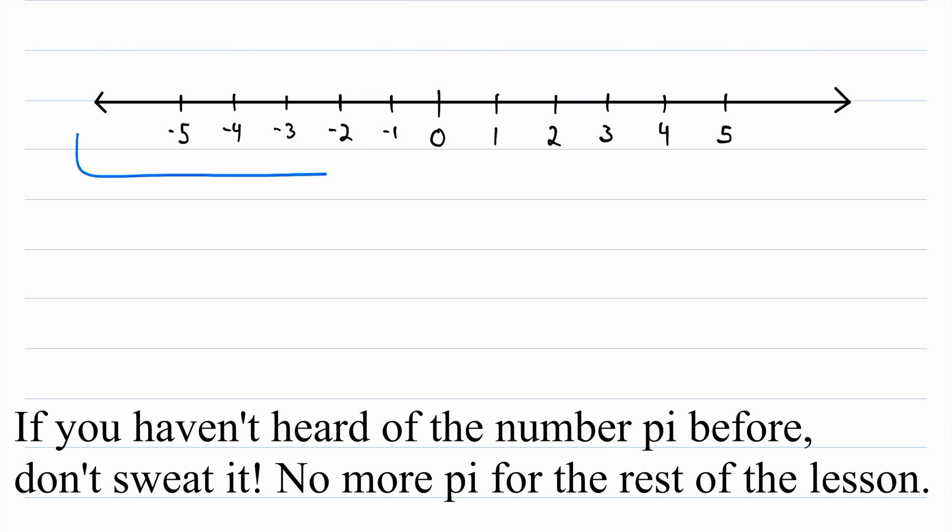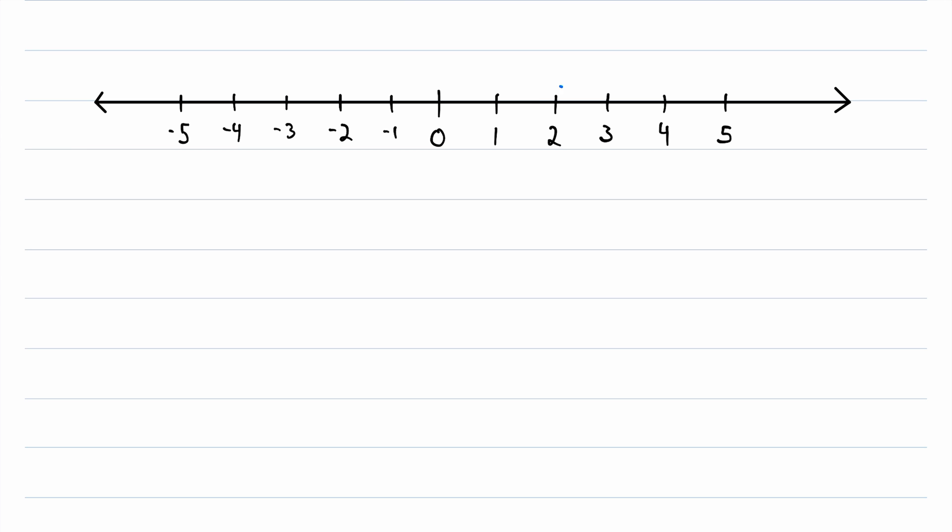So let's say we pick two numbers on this real number line. Suppose we pick 2 and 5 right over here, and we're trying to find the distance between 2 and 5. So what's the distance between 2 and 5? Well, we can see it quite easily by looking at this number line. We see that 2 and 5 are 1, 2, 3 units apart. So the distance between 2 and 5 is 3.